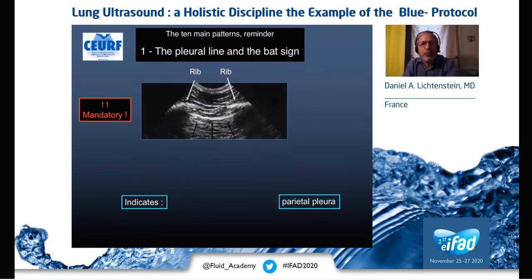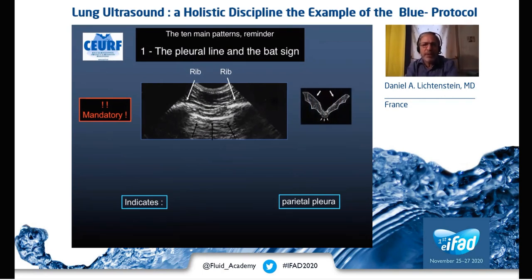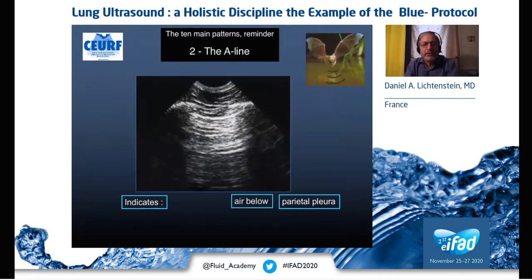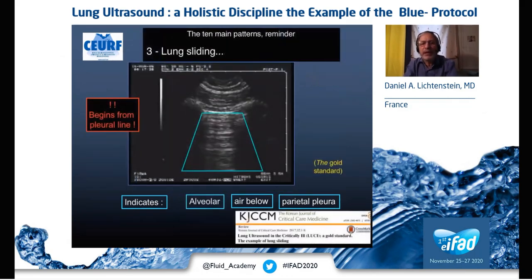The first sign is how to detect the pleural line. We use the shape of the ribs; it shows something like a bat — the bat sign. It always indicates the parietal pleura. This is the mandatory first step. The second sign is the A-line, which is the repetition of the pleural line, indicating that there is air — living or dead — below the parietal pleura.